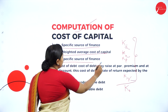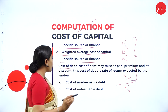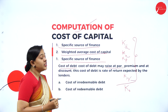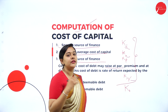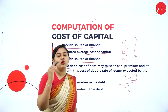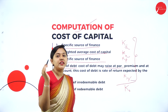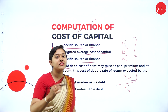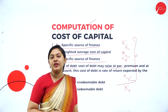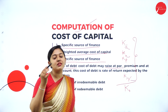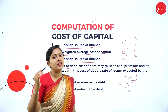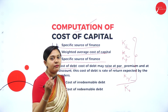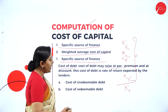What is par, premium, and discount? If 100 rupees is the face value and it is issued at 100 rupees itself, it is issued at par. If 100 rupees face value is issued 10% more than the face value, it is issued at a premium. If 100 rupees face value is issued less than the face value — say 90 rupees — then it is issued at a discount. Cost of debt is the rate of return expected by the lender, and we have cost of irredeemable debenture and cost of redeemable debenture.